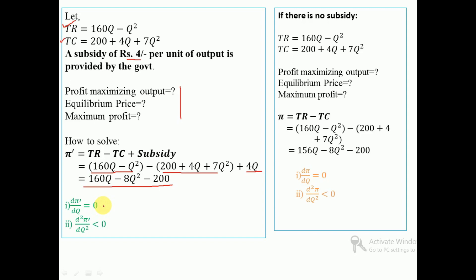To find the profit maximizing output we apply the first order condition and the sufficient condition of profit maximization. After fulfillment of these two conditions we obtain the profit maximizing output q, equilibrium price, and maximum profit. To know the impact of subsidy, we must also do the same calculation when there is no subsidy, using the same total revenue and total cost functions.